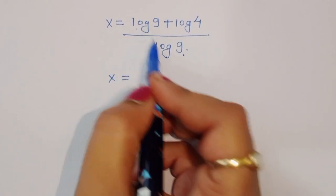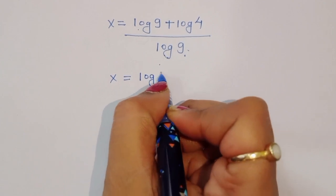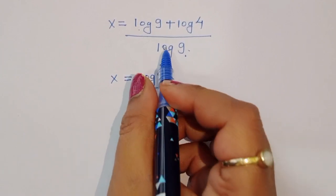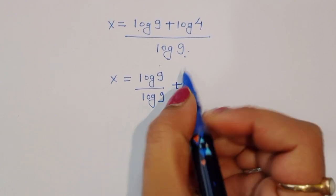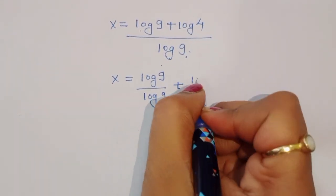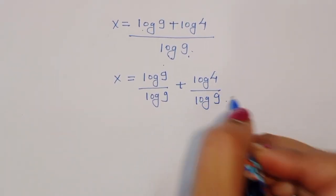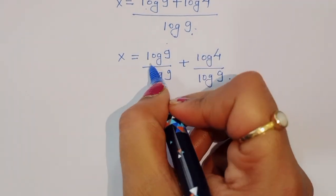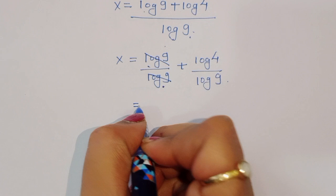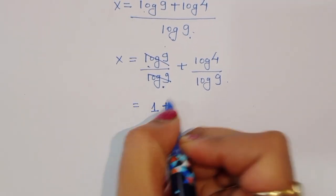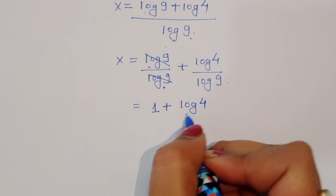Now we can separate this term. We can write x is equal to log of 9 divided by log of 9, plus log of 4 divided by log of 9. Log of 9 divided by log of 9 is 1, so x is equal to 1 plus log of 4 divided by log of 9.